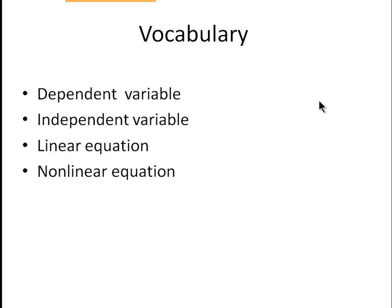Okay, so in this lesson, we're going to talk about dependent variables, independent variables. A dependent variable is going to rely upon something else happening, and an independent variable is not. We're going to talk about linear equations, linear being a straight line, and nonlinear equations, meaning it doesn't have a straight line. It's a curved line.